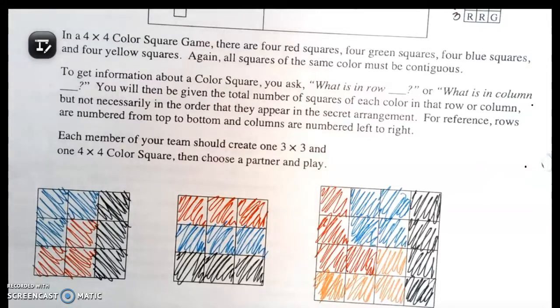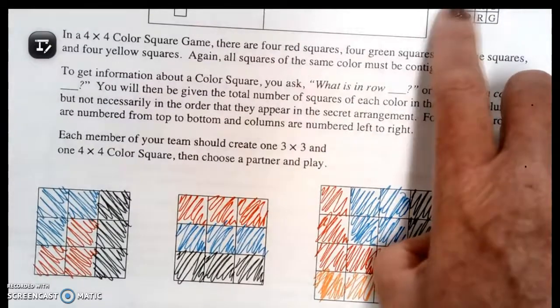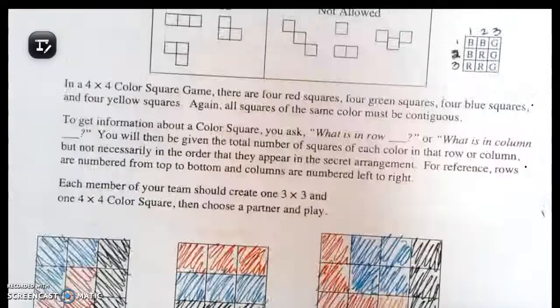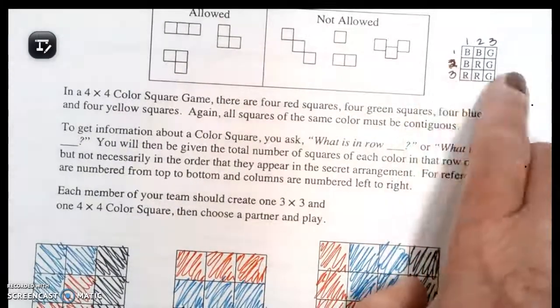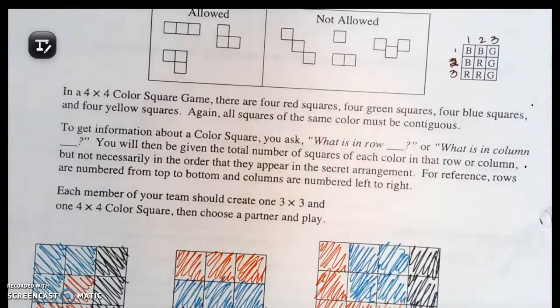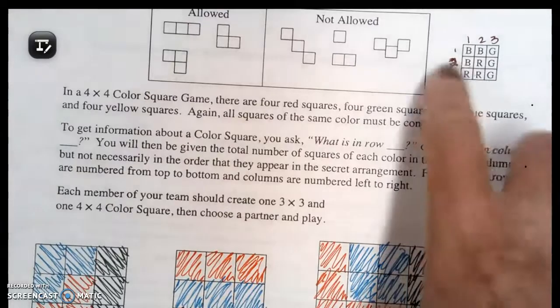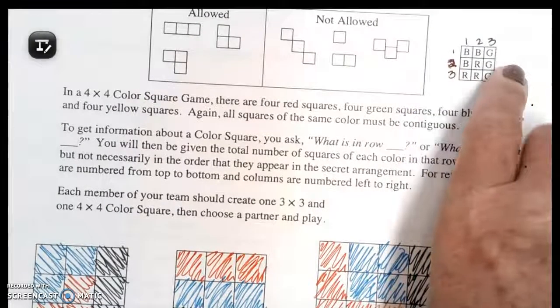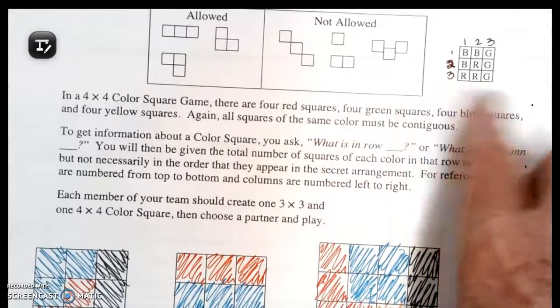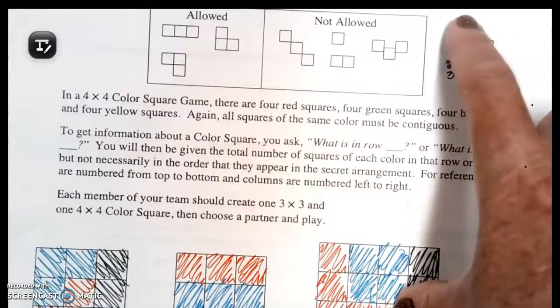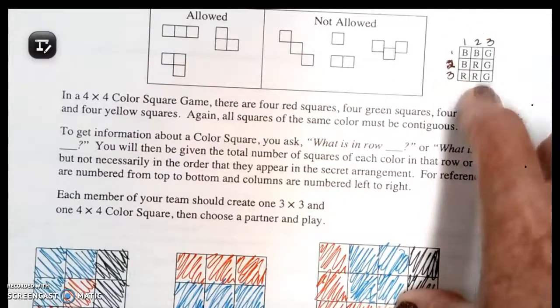To get information about a colored square, you ask what is in a row. Rows would be going this way. Row 1 would be this way, row 2 would be this way, row 3 would be this way. And then these would be the columns: column 1, column 2, column 3.